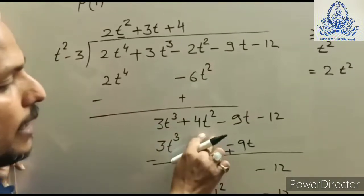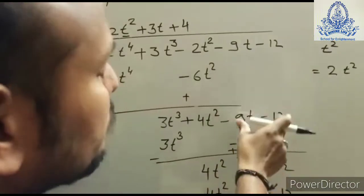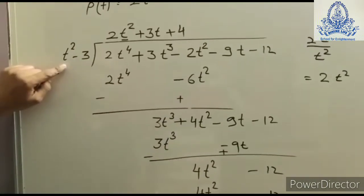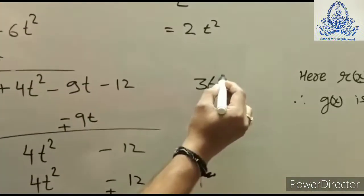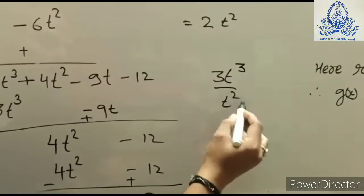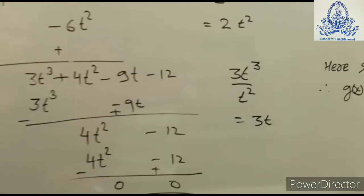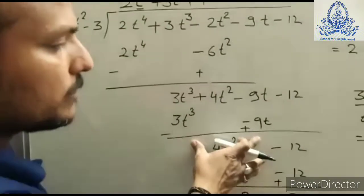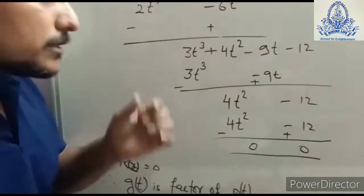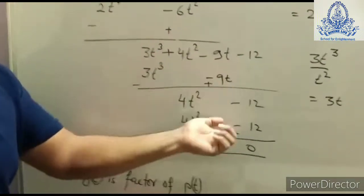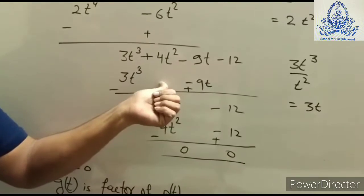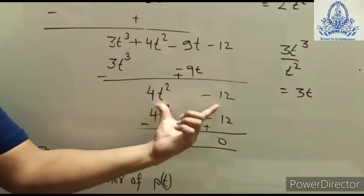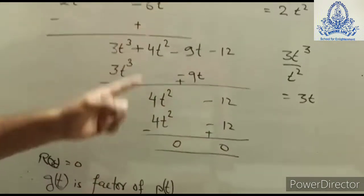After subtraction, the t³ term comes down as it is, and we combine the t² terms, giving 4t². We bring these terms down and divide again: 3t³ ÷ t² = 3t, the second term of the quotient. We multiply 3t with all terms of the divisor and write under the like terms, keeping the vacant place where there is no like term.